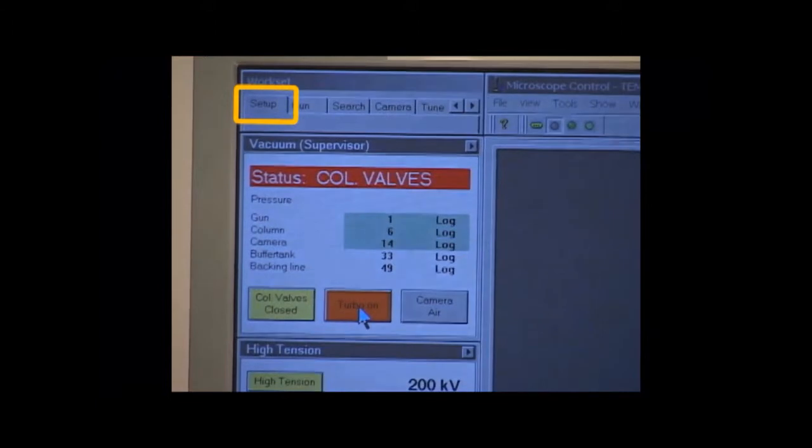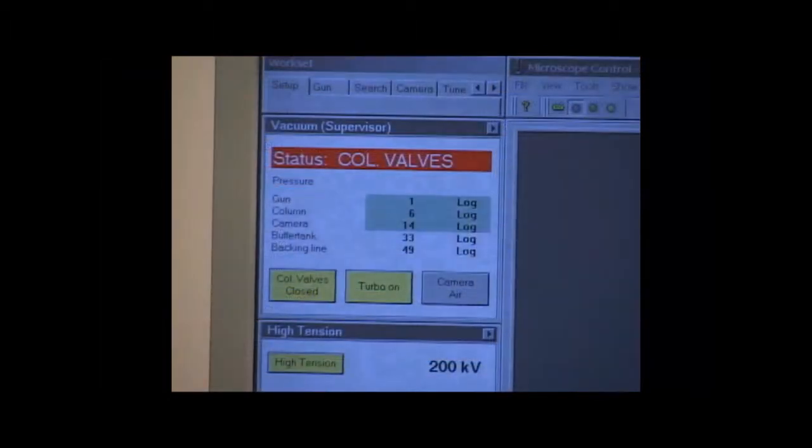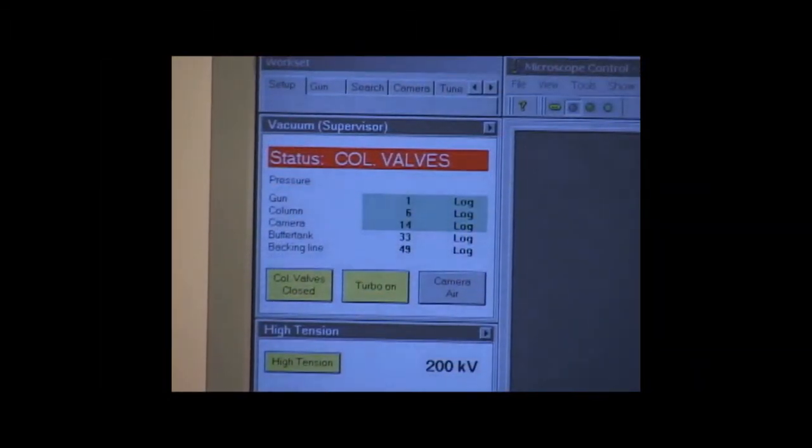Select Setup, Vacuum, and Turbo On, and hear the vacuum pump sound. After three minutes, the Turbo On box changes to yellow.